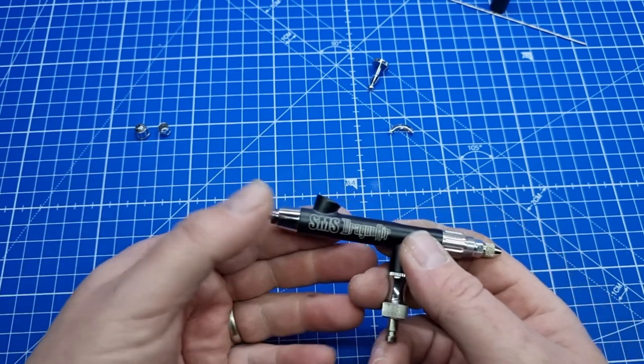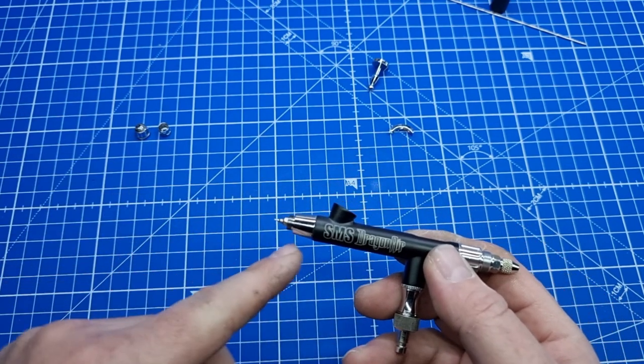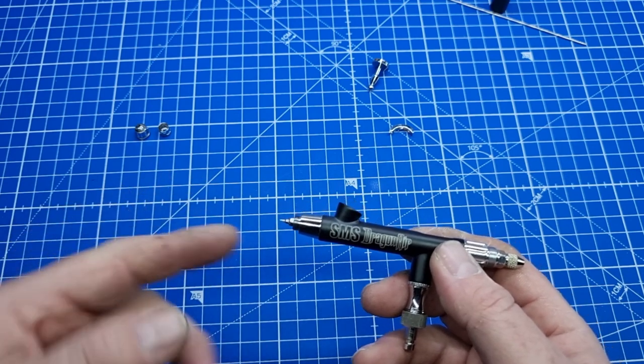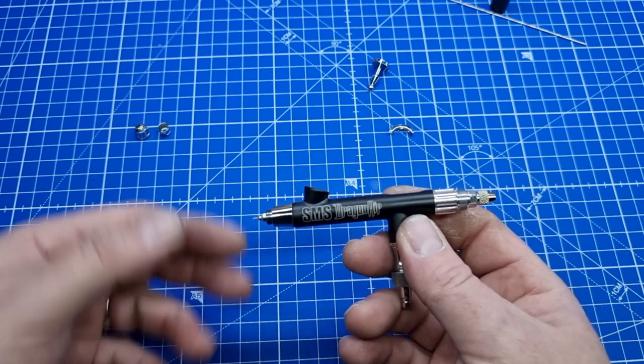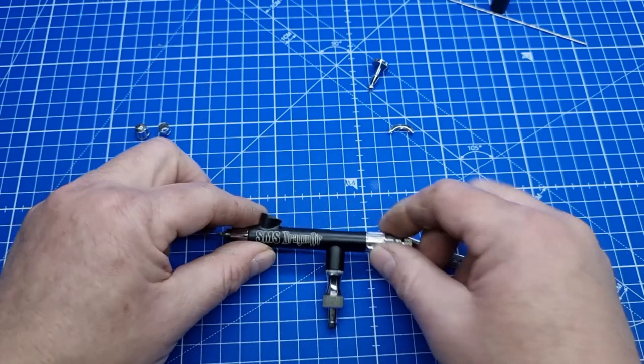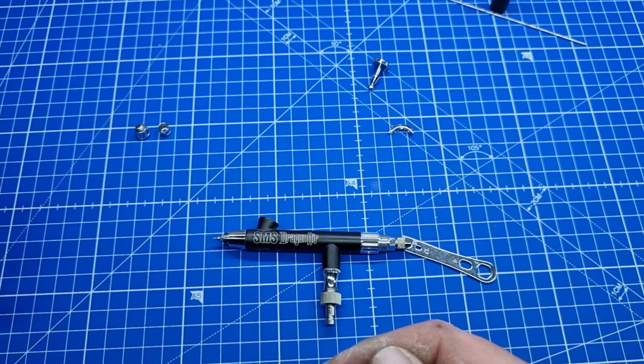If you don't do that up tightly, what's going to happen is you push the air, air won't come through the front so paint won't come through the front. It will come through the side and nothing will come through but air. So if you ever find that's the problem once you put it all back together and you can't get your paint out but you get air out, just make sure to check that front nozzle there is done up tightly.